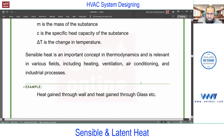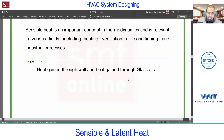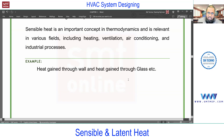Heat gain through wall and heat gain through glass can be considered as sensible. This is very important throughout load calculation — for all possible sources we check whether the source involves conduction, convection, radiation, and whether it is sensible only or sensible plus latent. According to that we have the calculation. This manual load calculation is the basic foundation for software load calculation.